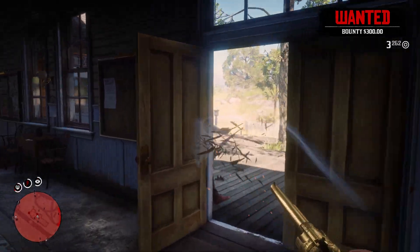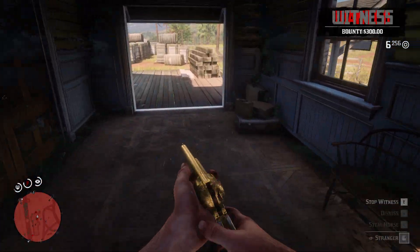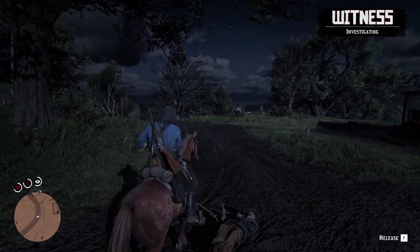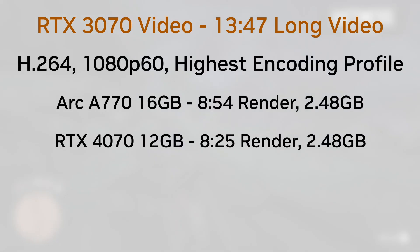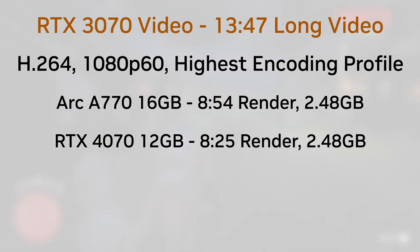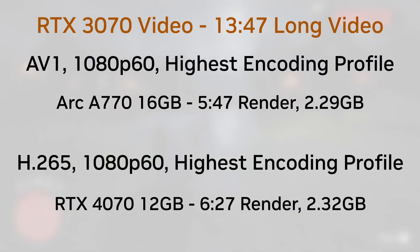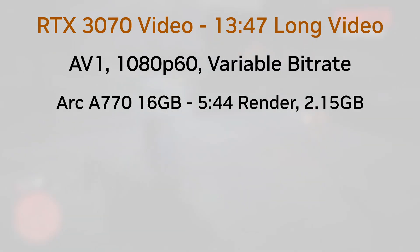I'm a pixel peeper and noticeable macro blocking is one of the more noticeable artifacts. I had my RTX 3070 review video rendered on both my 4070 and A770 with different codecs at different quality presets. Both the A770 and 4070 produced a very similar 2.48GB file when rendering with H.264 — the 4070 finished in just under 8.5 minutes, while the A770 took just under 9 minutes. Swapping to AV1 on the A770 cut render times to well under 6 minutes, with the file size shrinking to 2.29GB. Enabling intelligent variable bitrate further reduced the file to 2.15GB at a similar render time.